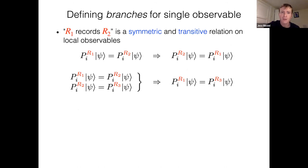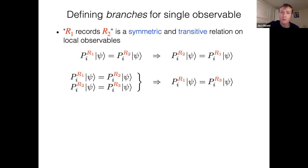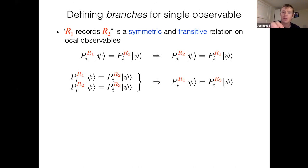An equivalent way to describe recording is that if you look at the reduced state at one region conditional on the other region's observable taking a certain value, these different possible values are orthogonal. Consider projecting on a particular eigenvalue i for the observable in region one, and then looking at the reduced state of the observable in region two. Like in a GHZ state — I project on either zero or one for one qubit and consider the state of the other qubit for each case. The key property is that the conditional states in the other region are distinguishable or orthogonal. The recording relationship is symmetric and transitive on local observables, and therefore it establishes an equivalence class.